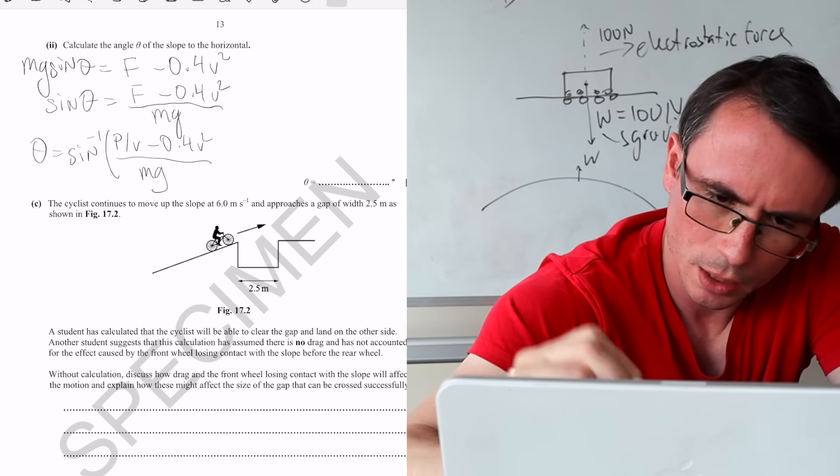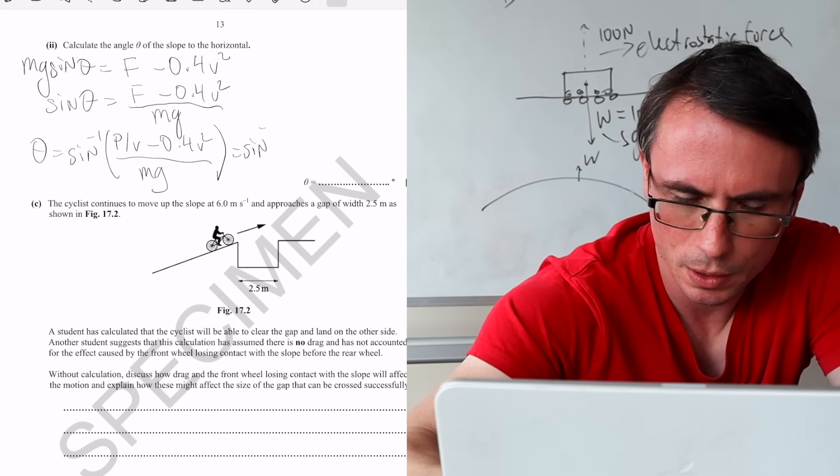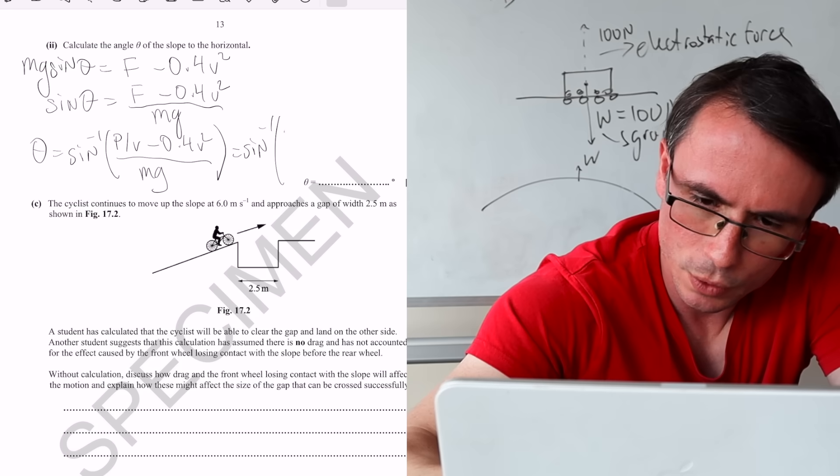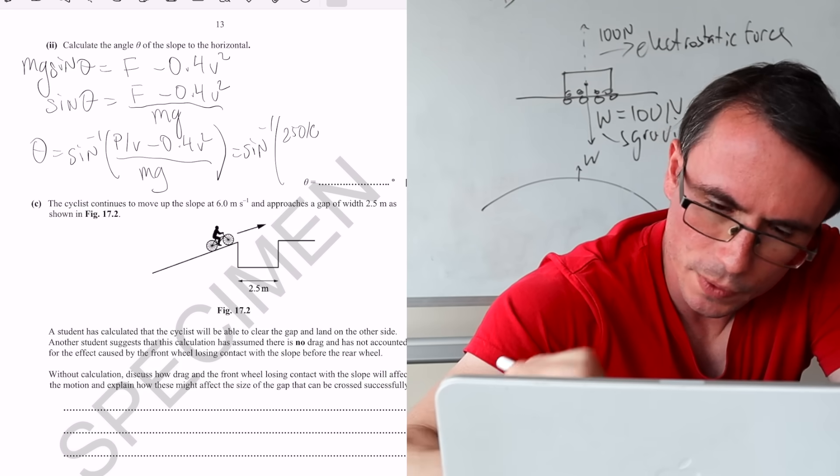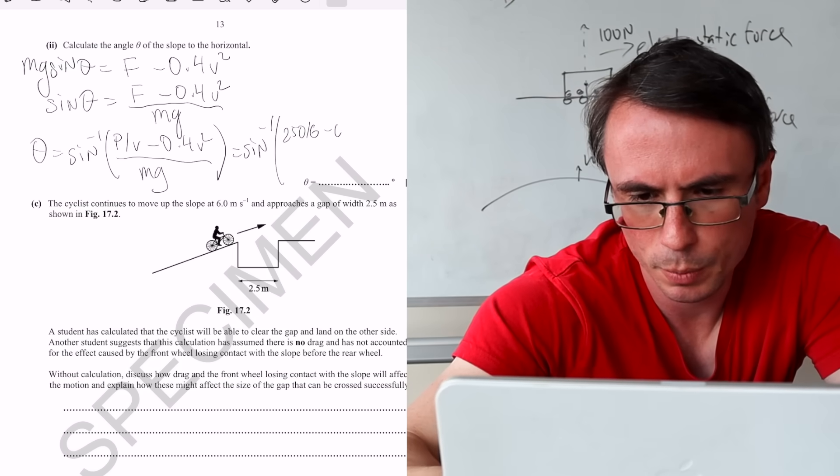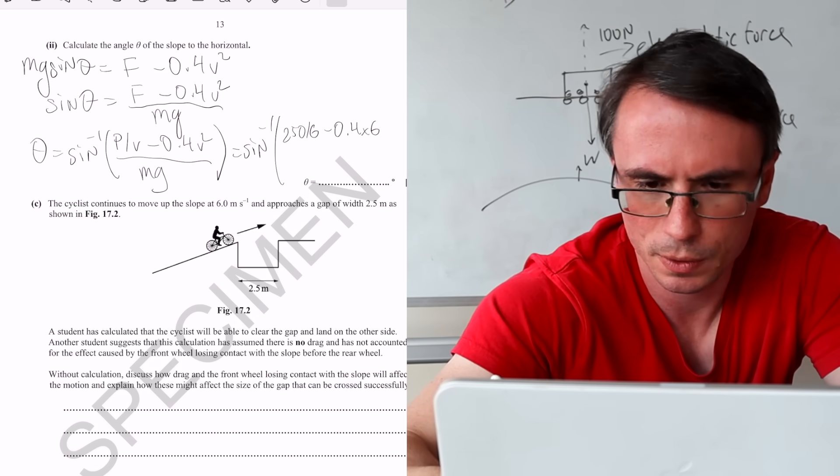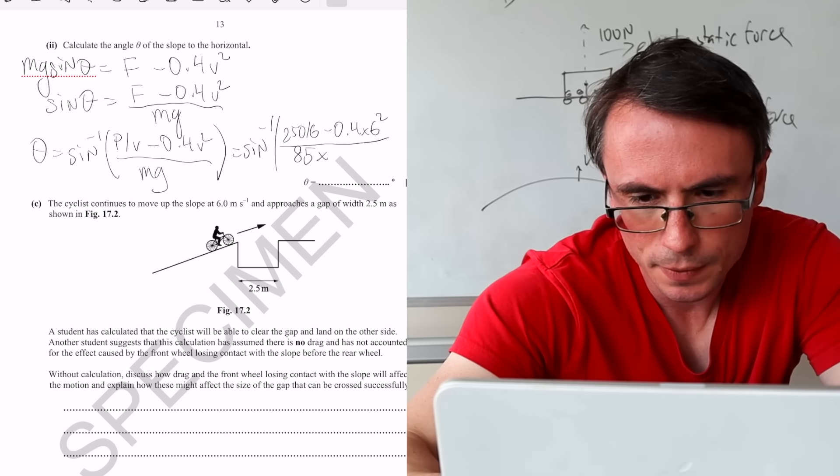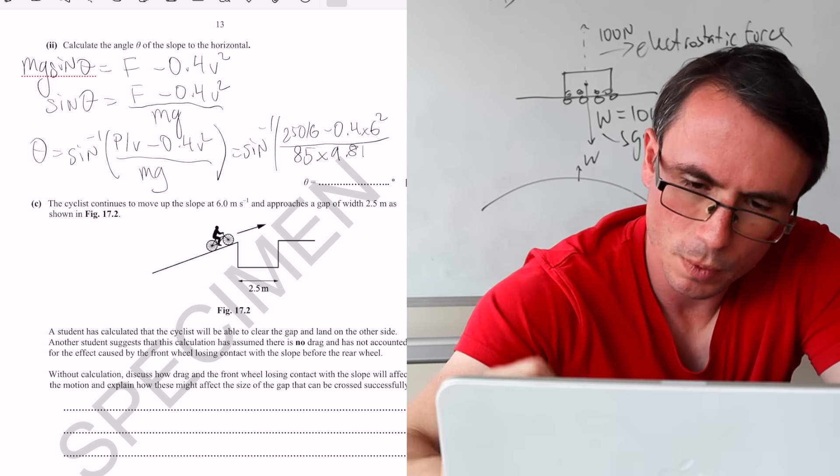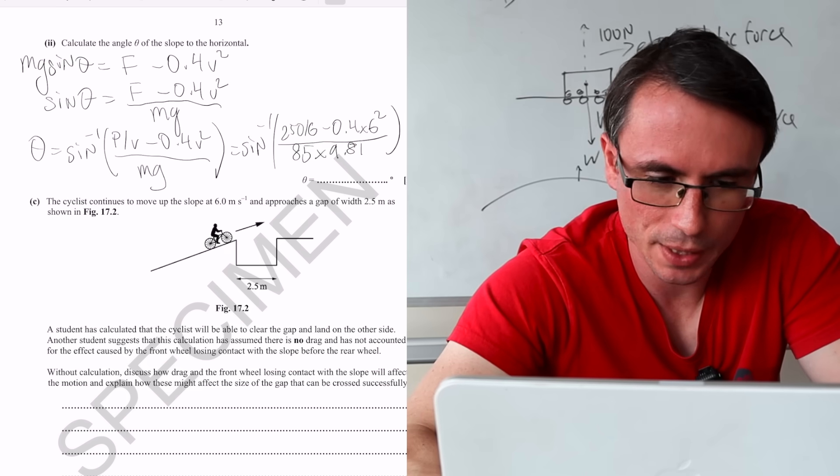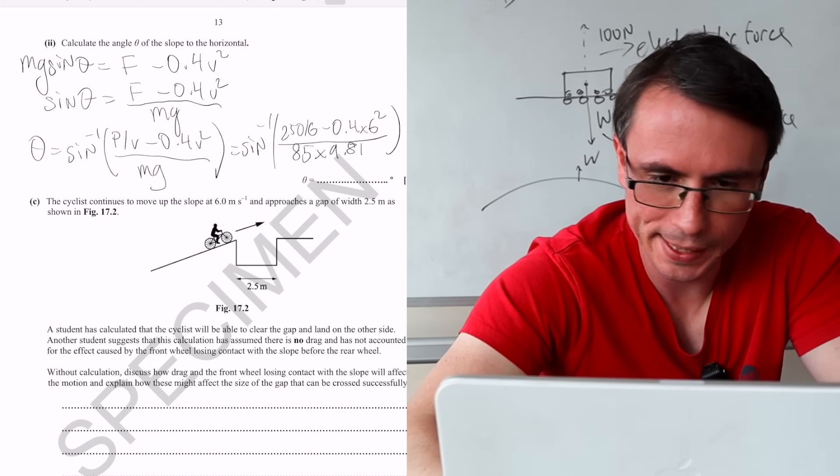Mg, which is inverse sine of 250 over 6 take away 0.4 times 6 squared, 85 times 9.81. And this here is going to give us an answer of 1.87.